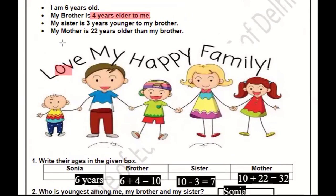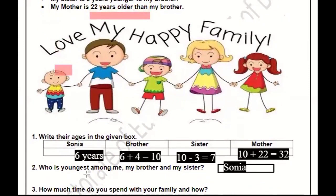Next: my mother is 22 years older than my brother. Brother's age is 10, plus 22 equals 32 years — that is the mother's age. The next question is: Who is the youngest? Youngest means the youngest in the family. Sonia is the youngest.